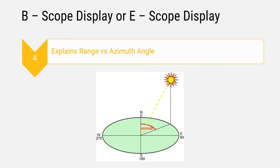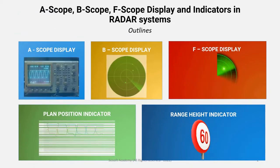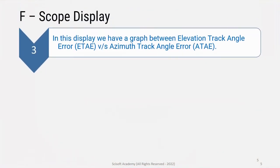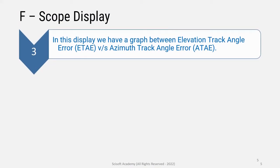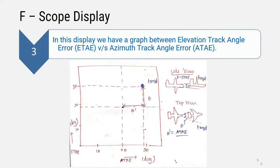This is the F scope display, which uses the elevation track angle and the azimuth track angle on its axes. If we look at the elevation angle, we use a plane example in side view — the plane moving gives us the elevation track angle error. The azimuth track angle error and the elevation track angle error together form the F scope display graph.